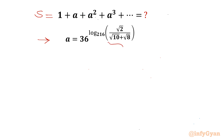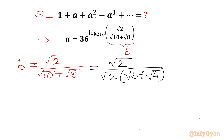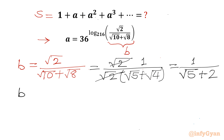I will call this bracket as small b, which we will simplify separately. So b = √2 / (√10 + √8). Now we can take √2 common from the denominator. So √2 / (√2(√5 + √4)) leaves us with 1 / (√5 + 2), since √4 = 2. So b = 1 / (√5 + 2).